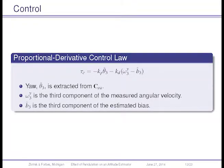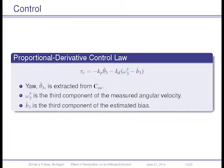Now I'll discuss the proportional-derivative control law used for the MICHAB project. It's a simple PD law: the first term is proportional control and the second term is derivative control. The angle theta-hat_3 is the estimated yaw angle extracted from the estimated rotation matrix. Omega_y3 is the third component of measured angular velocity, b-hat_3 is the third component of estimated bias, and these are the proportional and derivative gains.